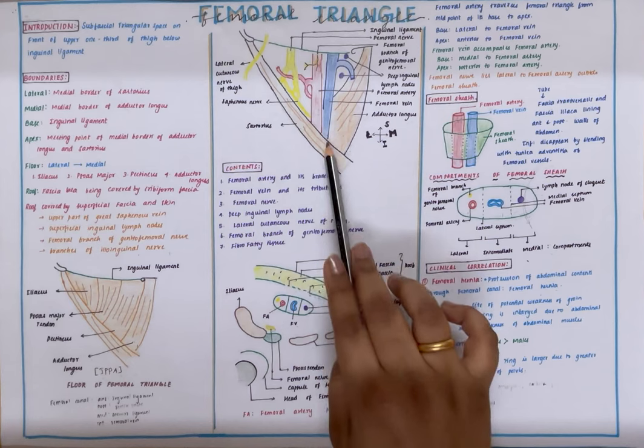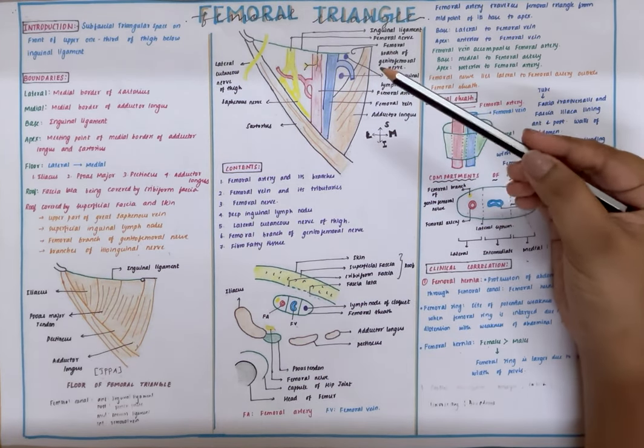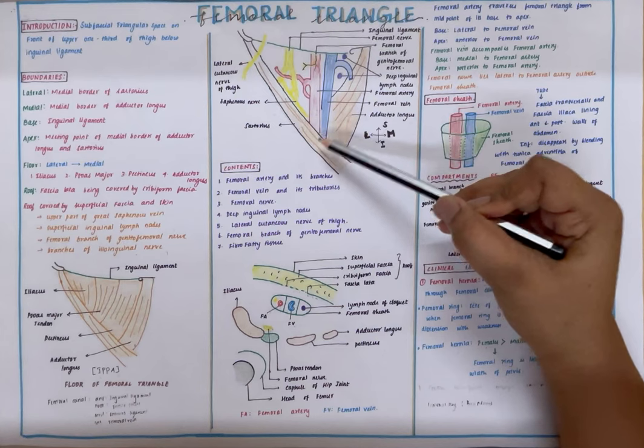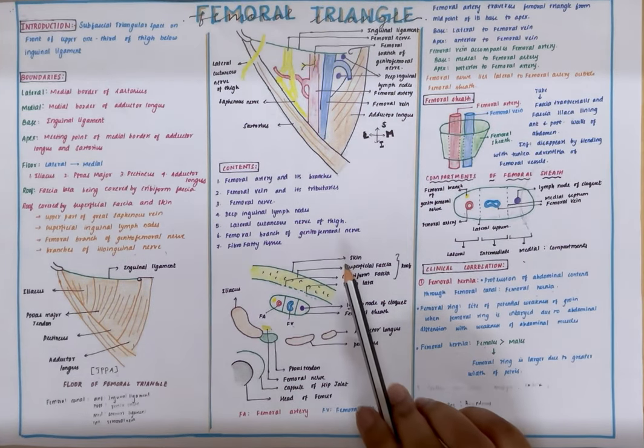The lateral border is formed by the sartorius muscle. The medial border is formed by the adductor longus muscle. The apex is the meeting point of sartorius and adductor longus, and the base is formed by the inguinal ligament.